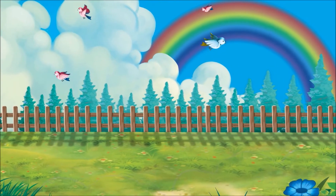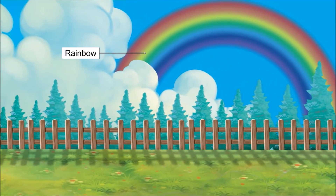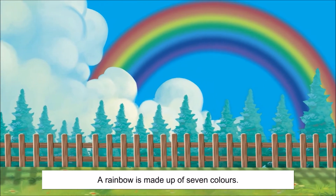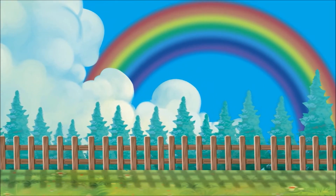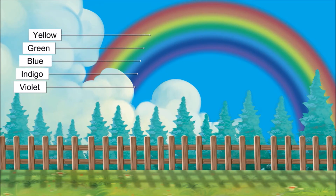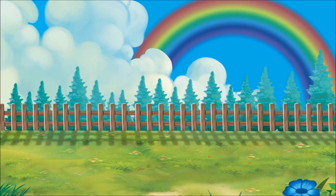Sometimes after the rain, we also see a rainbow in the sky. A rainbow is made up of seven colors. These are violet, indigo, blue, green, yellow, orange, and red. The sky looks beautiful with a rainbow.